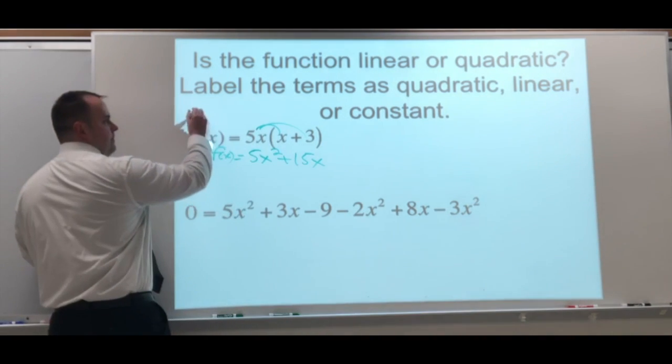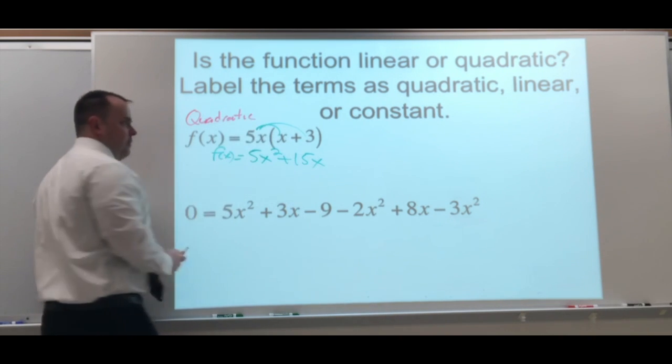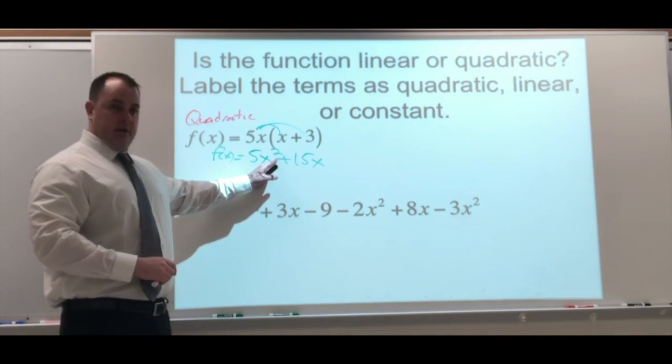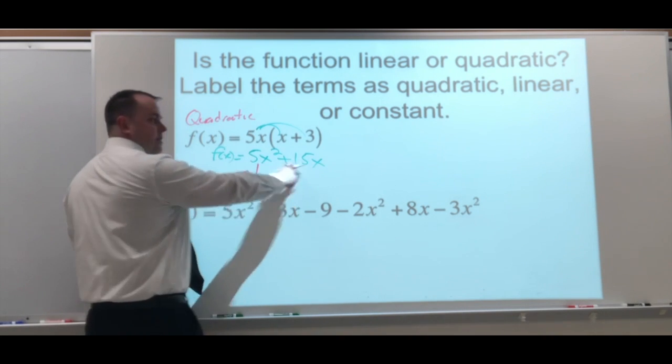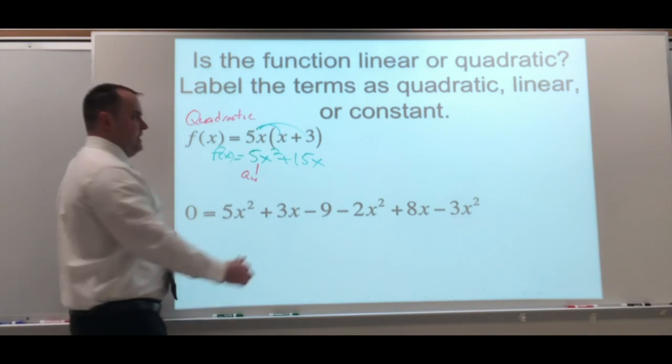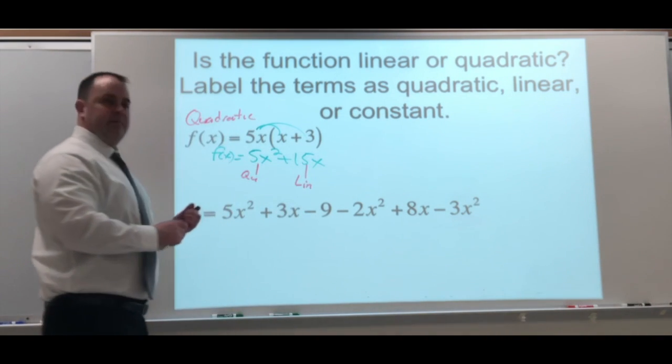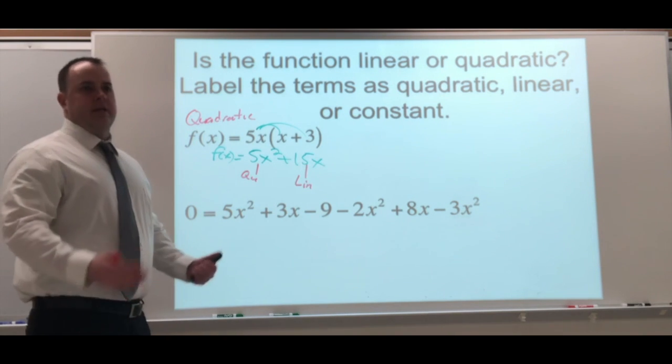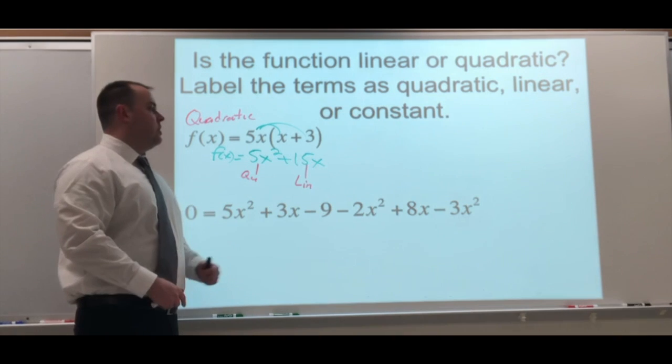So the whole thing is a quadratic. And if you're looking at which terms are what, the term with the square is going to be the quadratic term. So this here is the quadratic. The term with just the x variable is the linear. And if there's a term that does not have a variable, that would be considered the constant. It's constant because there's no variable. No variable to plug into, so that's never going to change.